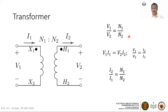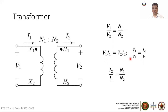If we assume an ideal transformer with no losses, the power in the primary winding equals the power in the secondary winding. Rearranging terms, we get the ratio for the current compared to the ratio for the voltages. The turns ratio is related to the current ratio, but note that this relationship is the inverse of the voltage ratio.